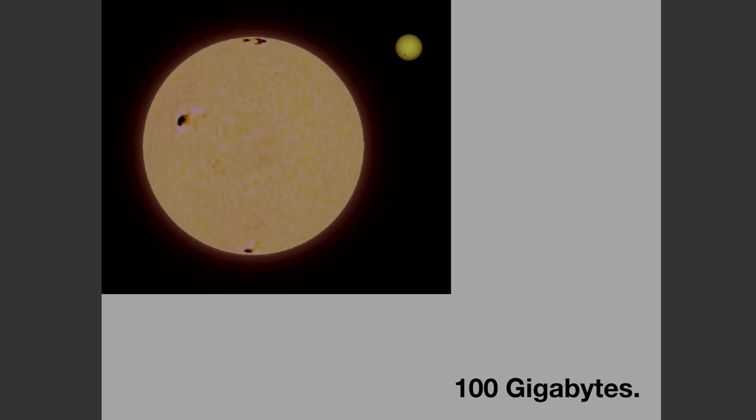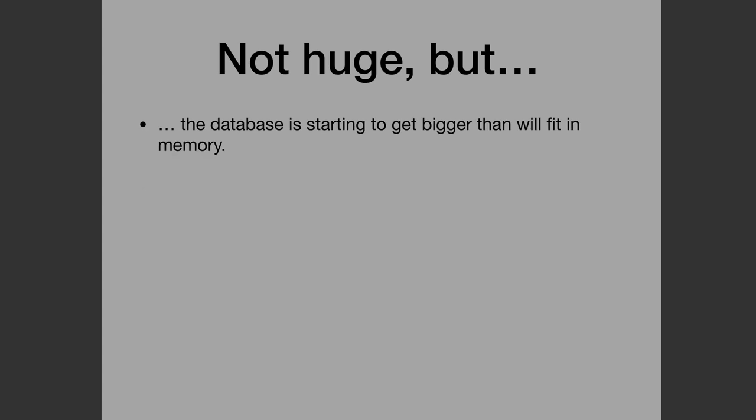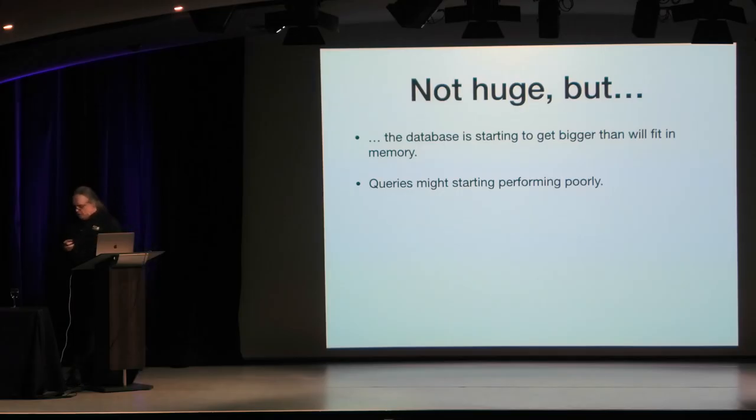Your database has grown - now it's 100 gigabytes. It's not huge, but it's starting to get bigger than will fit into memory. This is kind of the first inflection point in a database, where the whole thing can't be squeezed into RAM. And this is where queries will start performing poorly - those 12-page long queries with five CTEs and a lateral join against a function call that you were incredibly proud of, that ran really fast on a small database, suddenly start coming apart.